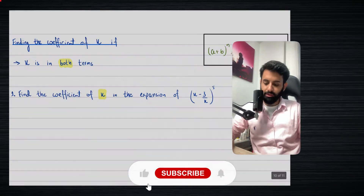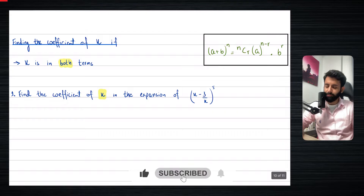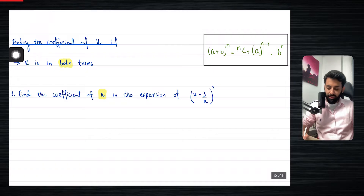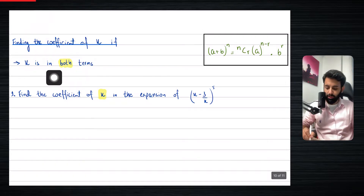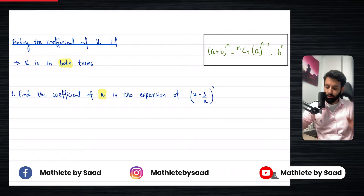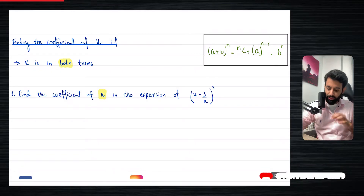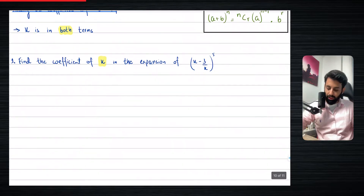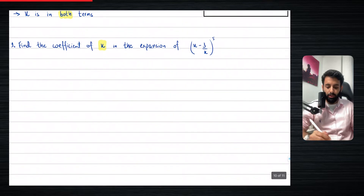Hello everyone and welcome back. In this video we will learn the second last concept related to the binomial theorem — how to find the coefficient of x when x is in both terms. In the last couple of videos we learned what to do when x is in the first term, in the second term, and we also looked at some exceptions. As always, we learn this with the help of an example question.